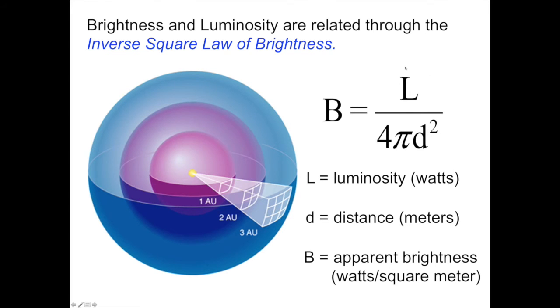So L is the luminosity in units of watts. D is the distance in meters. Because it appears as distance squared, indeed 4πd² is the surface area of a sphere of radius d. We have watts per square meter, and so we have brightness, apparent brightness, in units of watts per square meter when I express them conventionally in terms of metric units.